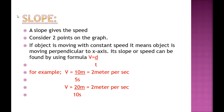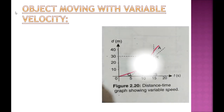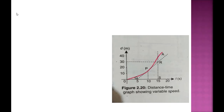Variable speed means the value of speed is not fixed. The object does not cover equal distance in equal intervals of time. Time is divided into equal intervals from 0 to 5, 5 to 10, 10 to 15, and 15 to 20 seconds, but the object's speed is changing.